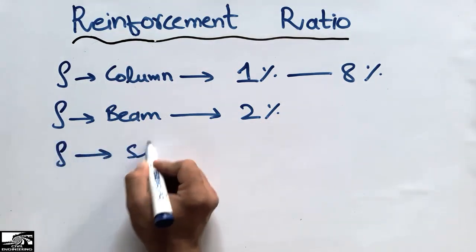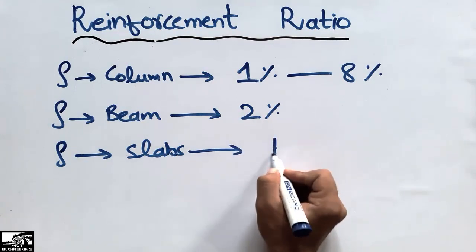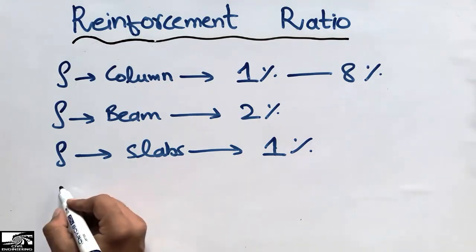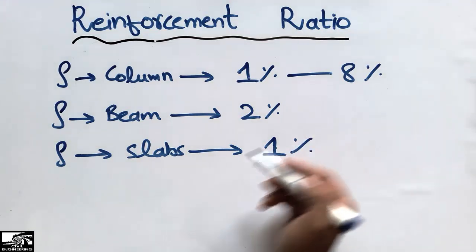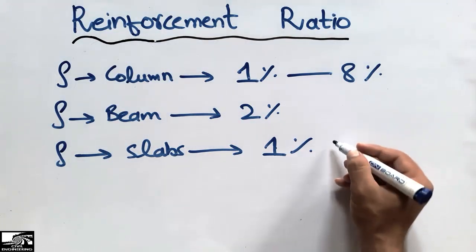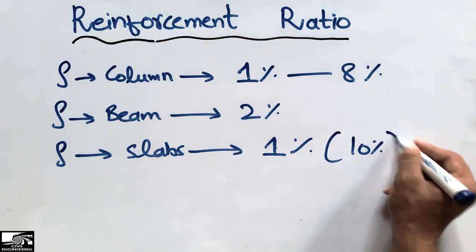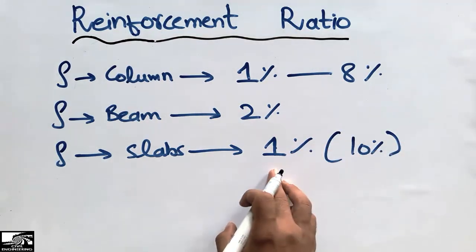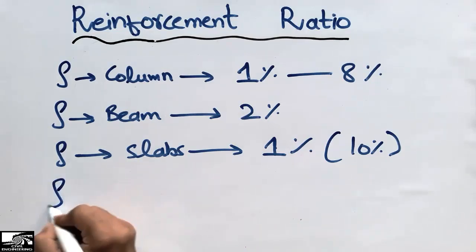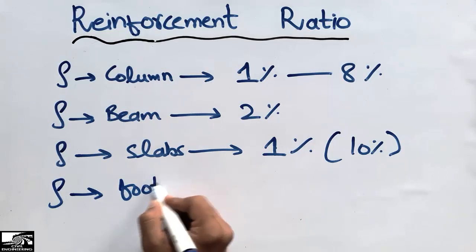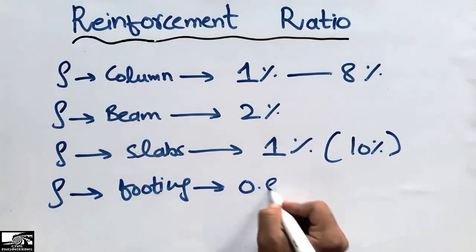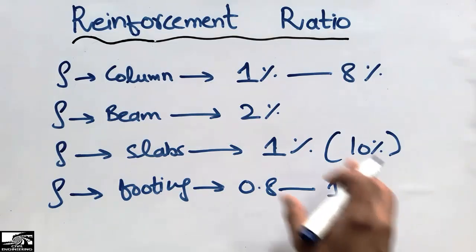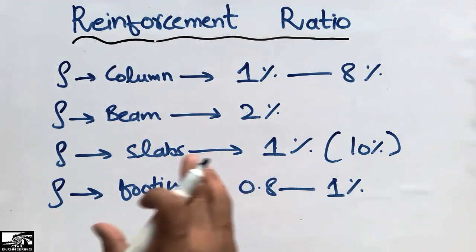For slabs, around 1% is used — we can go slightly more or less, but we should not exceed the limit significantly. For example, if the typical value is 1%, we cannot use 10%; we should stay around 2% or 0.5%. For footings, the general range of the reinforcement ratio is 0.8 to 1%. So these are the allowable limits of reinforcement ratio generally used in the most common structural members.